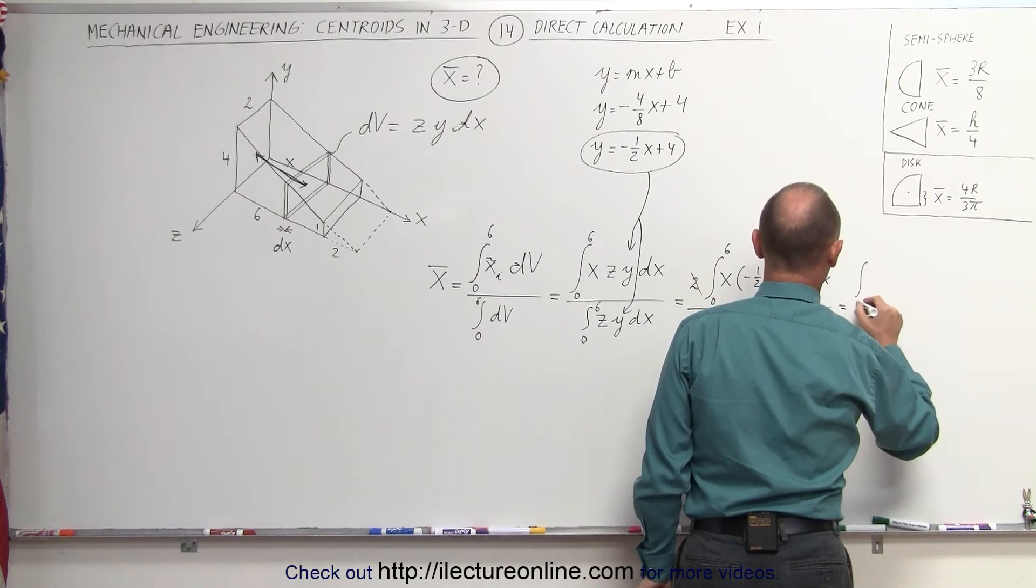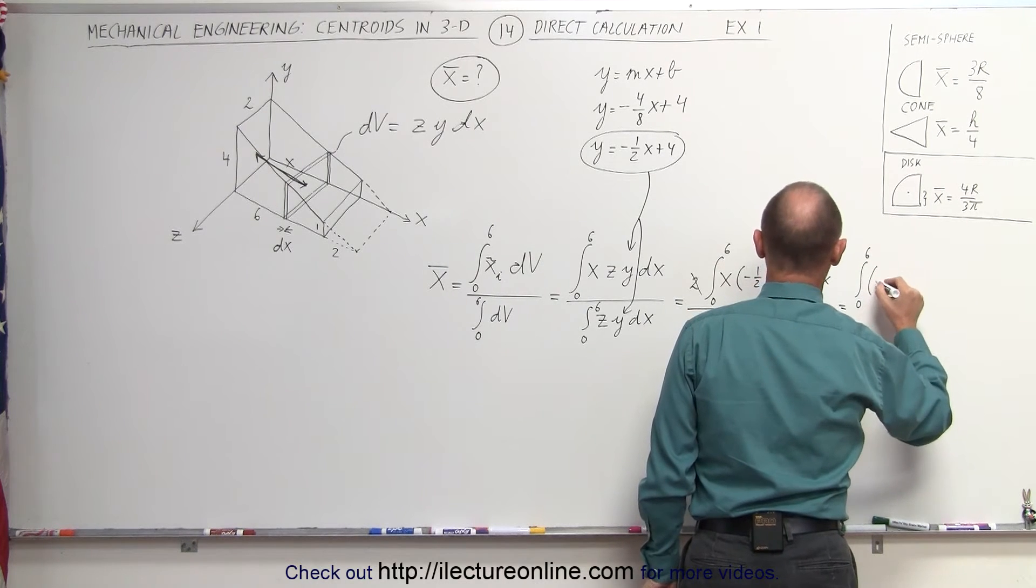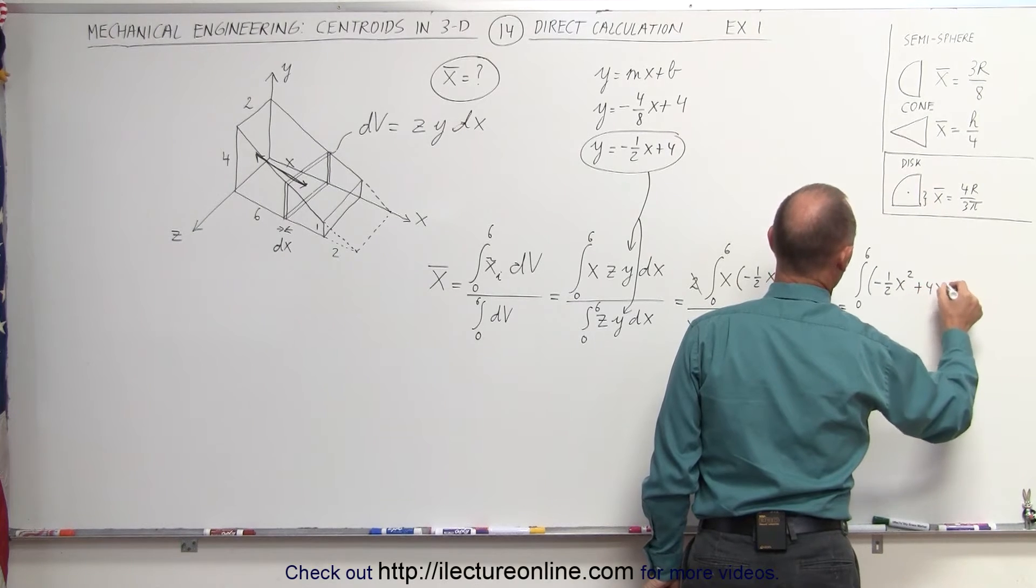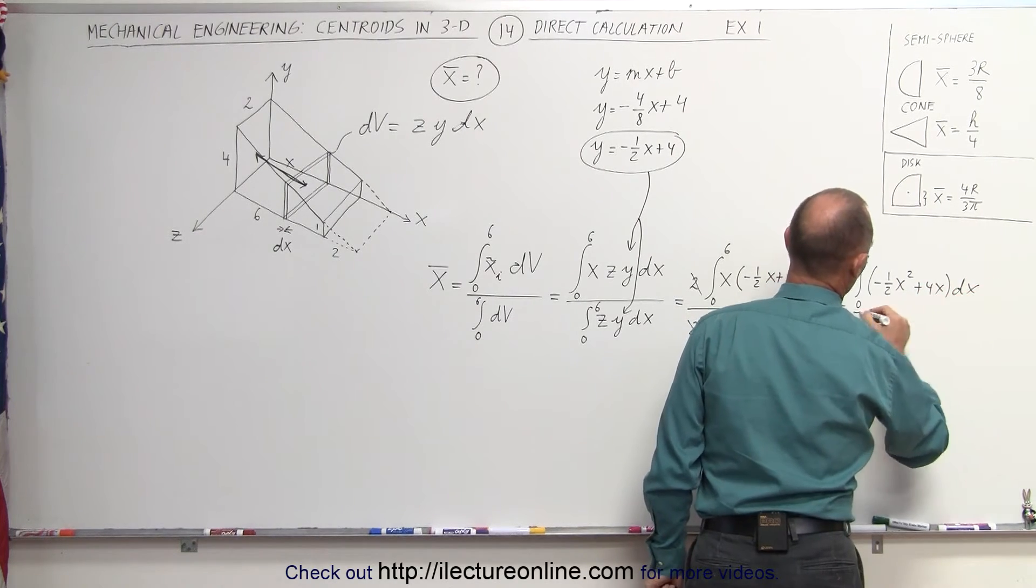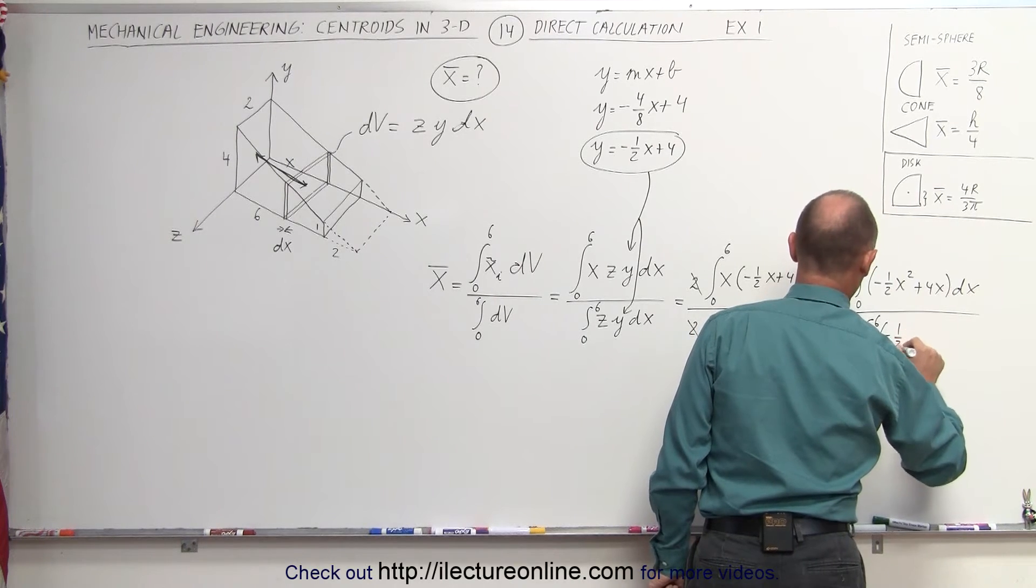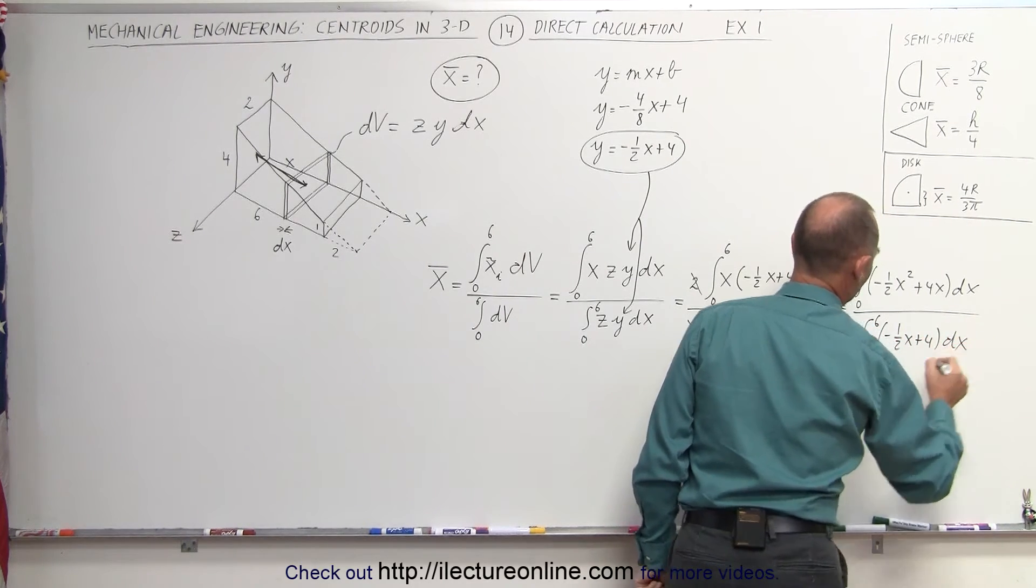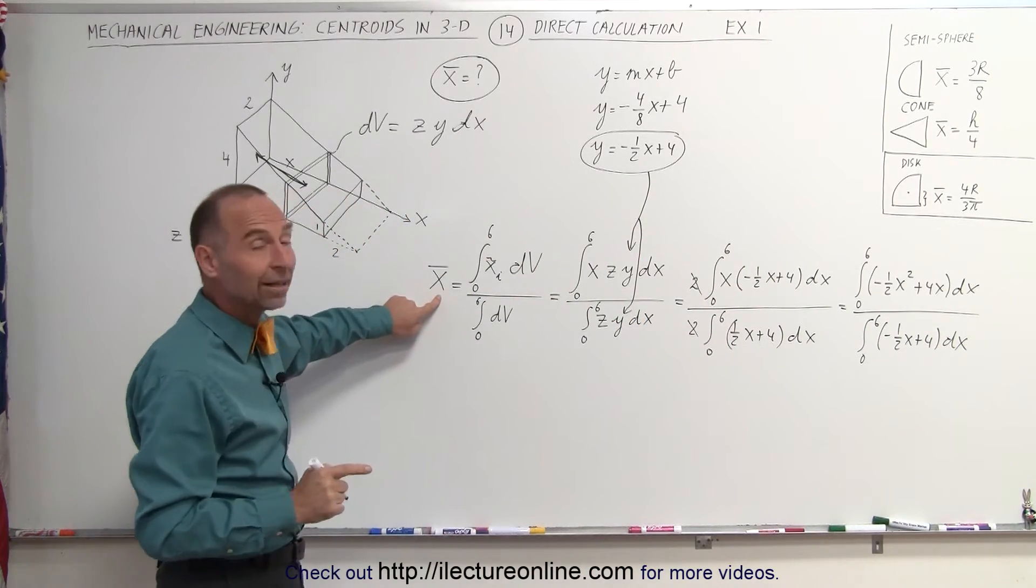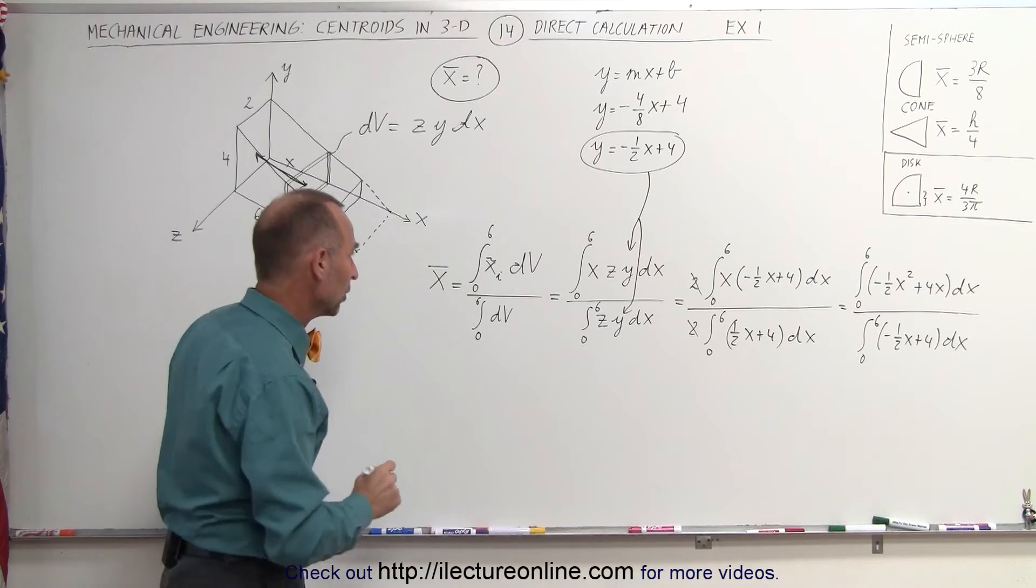Then we can multiply this x times what's inside the parentheses and the 2's can cancel out. That gives me the integral from 0 to 6 of the quantity minus 1 half x squared plus 4x times dx divided by, in the denominator from 0 to 6, we get minus 1 half x plus 4 times dx. And now we're ready to integrate both the numerator and the denominator, which allow us to find out what the x-coordinate of the centroid is.